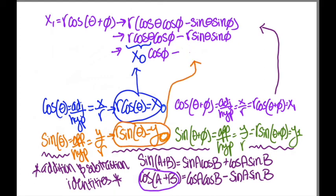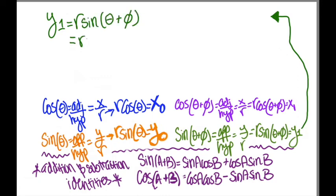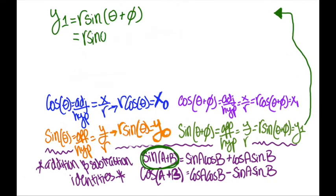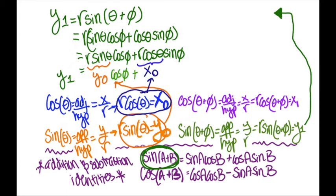so we can substitute in these values into our equations to get the following relationships. We can now repeat this same process with the y1 equation, except this time we apply our addition identity rule with sine a plus b, to get r sine theta plus cosine phi plus r cosine theta sine phi. Again, we can substitute in our values of x0 and y0 into these equations.